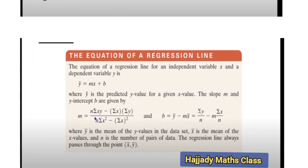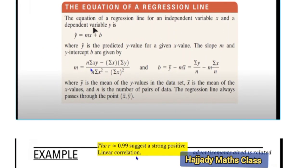Now the equation of a regression line, the equation of regression line for an independent variable x and a dependent variable y is this. This is the equation for a regression line. This is for a linear regression that can be used for prediction like I said earlier on.